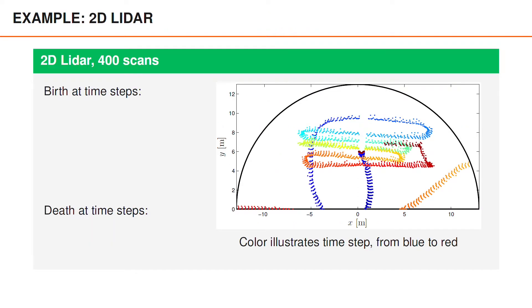We can have a look at what the object birth and death are for a simple example. On the right here, we have illustrated 400 time steps of LiDAR data. The black semi-circle illustrates the sensor's field of view, and the different colored points illustrate the time, starting from blue and then ranging to red, which is the final time steps. In total, during these 400 time steps, there are four objects, pedestrians specifically, that are inside the field of view of the sensor, at least at some point.